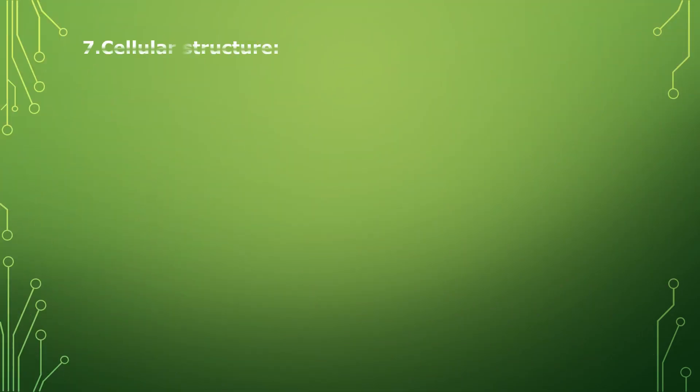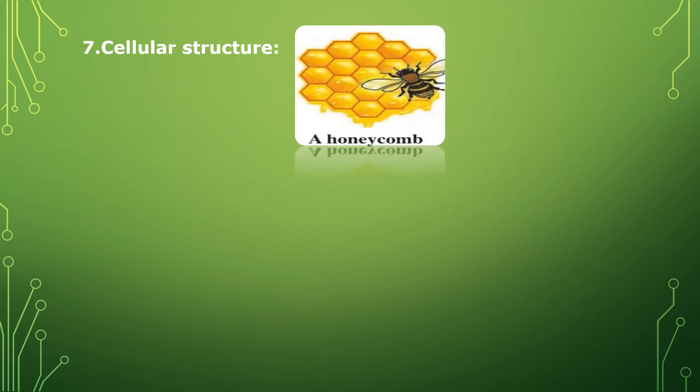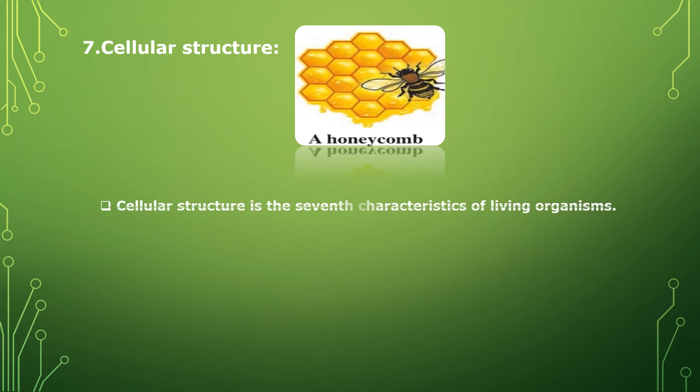The next characteristic is cellular structure. Students, have you seen a honeycomb? There are small compartments in the honeycomb, and these compartments are joined together to form the honeycomb. Similarly, a wall has bricks — we firmly join the bricks together. Cellular structure is the seventh characteristic of living organisms.